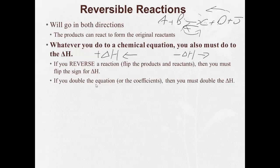Also, if you double the equation or the coefficients, you must double the delta H. So if we say now 2A plus 2B, that would be 2C plus 2D plus double the amount of heat.